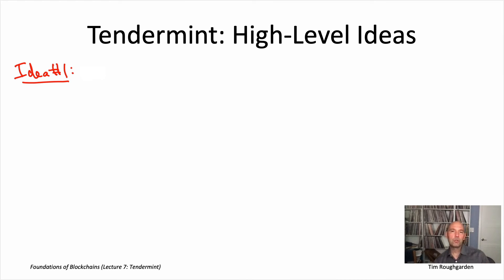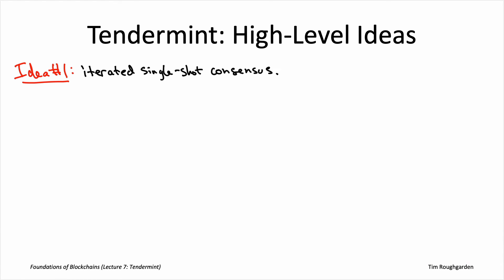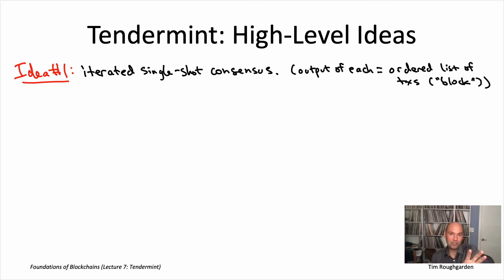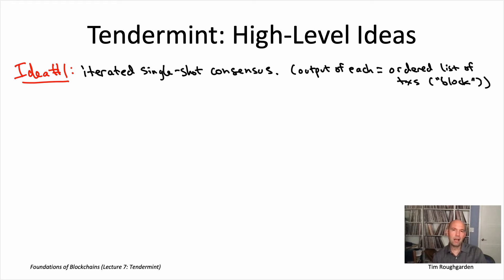High-level idea number one is to reduce the multi-shot consensus problem — state machine replication — to single-shot consensus. We're going to iterate over and over again a protocol that looks quite a bit like a Byzantine agreement protocol. The output of each of these Byzantine agreement computations should be a block belonging to a blockchain — just some batch of transactions sequenced in some way. A node running Tendermint is only going to be worrying about one single-shot consensus instance at a time. The current block that a node is trying to figure out is called a height.